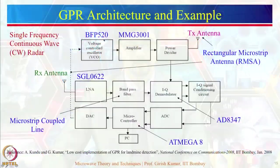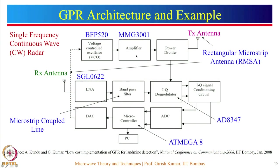Such a system has been implemented at IIT Bombay. In the transmit path, the VCO uses a BFP 520 transistor and the amplifier uses MMG 3001 IC. The transmitting and receiving antennas are of rectangular microstrip type (RMSA). The LNA is implemented using SGL 0622 IC, the bandpass filter uses microstrip coupled-line, the IQ demodulator uses AD 8347 IC, and the controller uses ATmega 8 with built-in ADC. The signal received by the IQ demodulator is given through the controller to software on a PC for further processing and display.